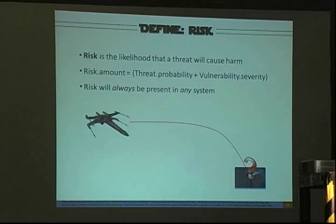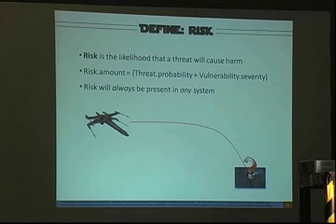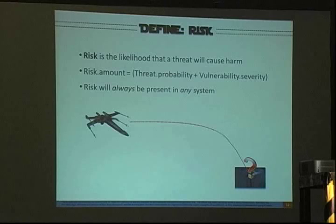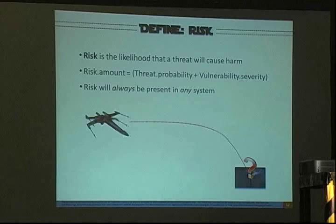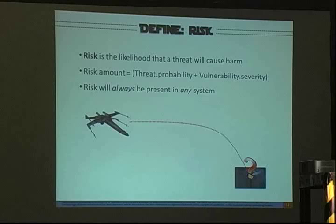And then risk: that's the likelihood that the threat is going to cause harm. The pseudocode here is that threat probability plus the severity of the vulnerability equals your amount of risk. The more likely something is to happen and the worse it will be if it happens, the more risk you have. Just remember, you will always have risk in any system — if you didn't have risk, you basically wouldn't have a system.